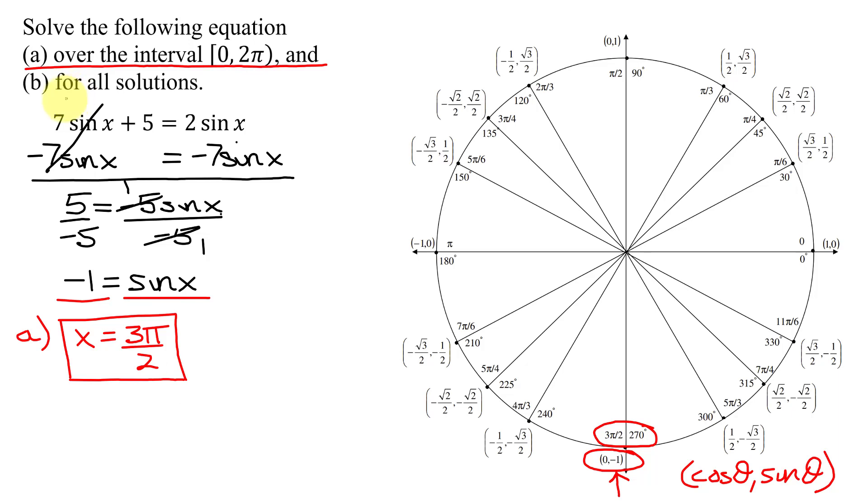Now in part B, we need to find all solutions. There are a couple of different ways of doing this. We're going to take the answer we got from part A of 3π over 2, this angle here, and then I want every possible angle that's coterminal with this angle.